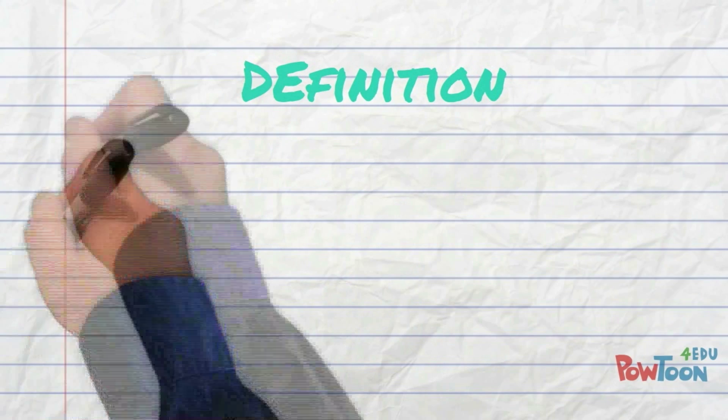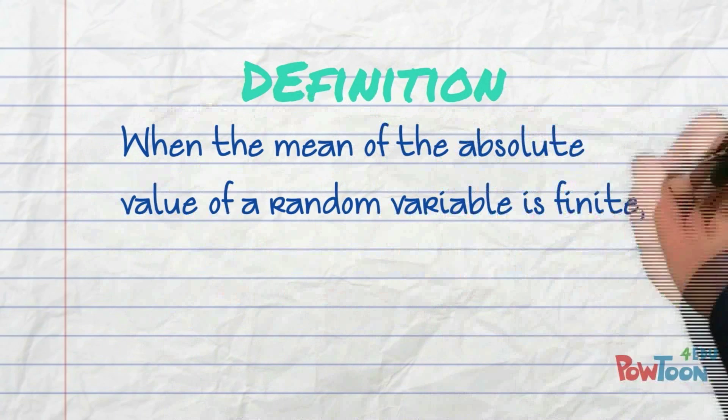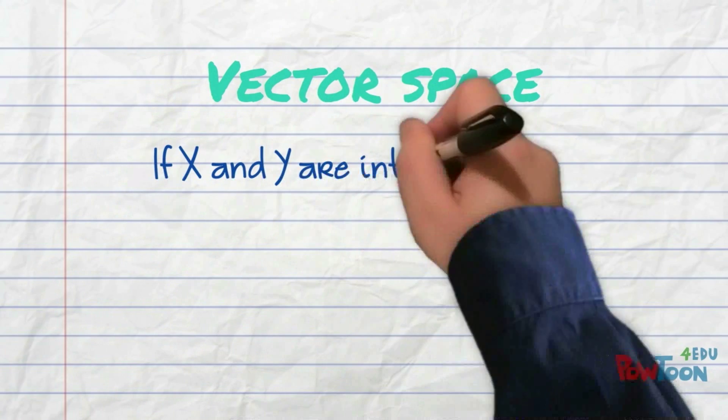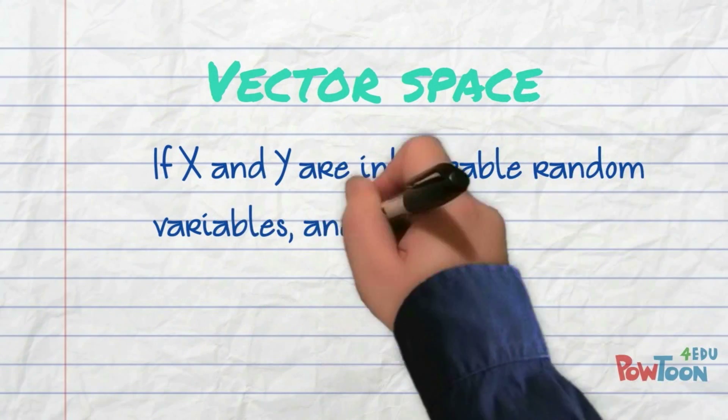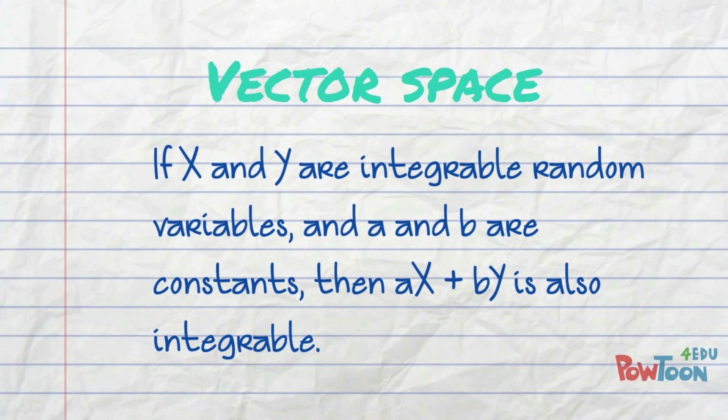When it is finite, we say that the random variable is integrable. Now the set of integrable random variables form a vector space. If x and y are integrable random variables, and a and b are constants, then a times x plus b times y is also an integrable random variable.